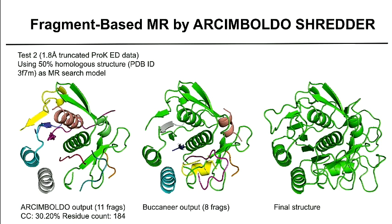The third test used a 1.8 angstrom truncated proteinase K electron diffraction data set with the cuticle-degrading protease as the search model. The Arcimboldo output showed 11 fragments finding about 65 percent of residues. Upon running Buccaneer, it built in a yellow helix, a blue strand, and a mini loop. It was then relatively simple to reach the final structure by making seven connections.